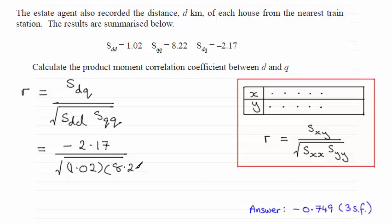And so just getting on the calculator and working that out, we end up with minus 0.74941 and so on. And when rounded to three significant figures, that gives us minus 0.749 to three significant figures.